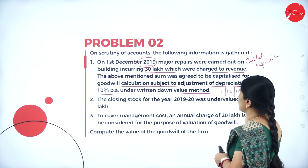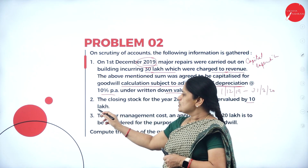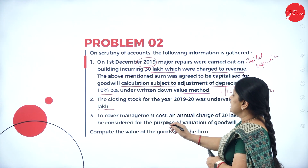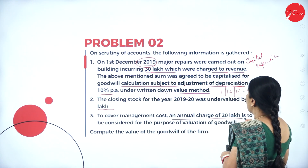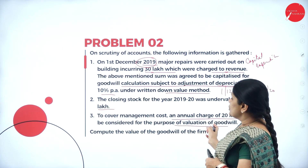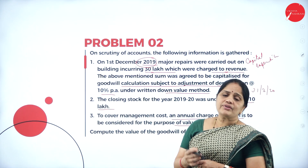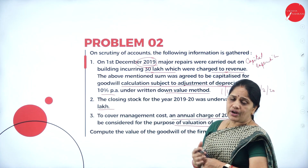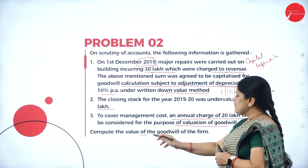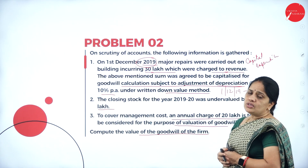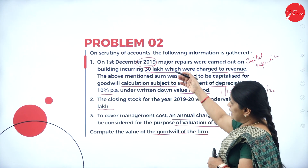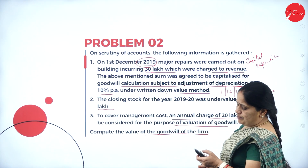The closing stock for the year was undervalued by 10 lakhs, so we have to add back the 10 lakhs. To cover management cost, an annual charge of 20 lakhs is to be considered for the valuation of goodwill, so every year we have to deduct 20 lakhs from the profits as management cost. We need to compute the value of goodwill after making all these adjustments.